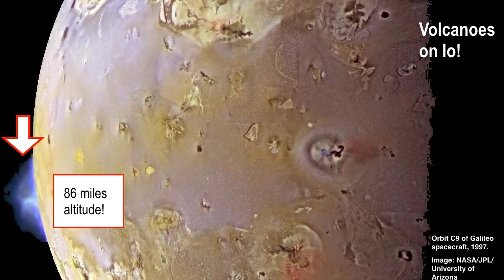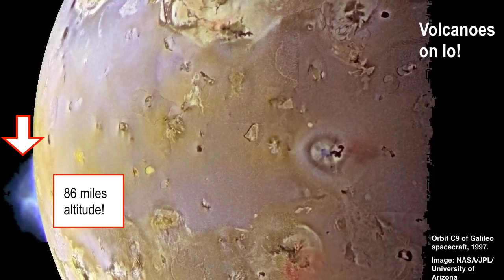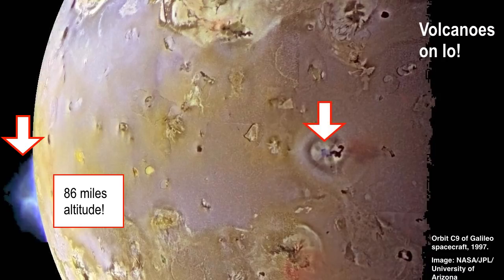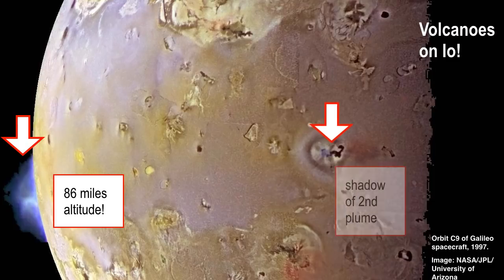Look at this image carefully — you see another plume. There's a black smudge with a plume above it. Come up and point it out. That's the plume right there — and the black smudge is the shadow of it. The plumes get so large because the force of gravity at the surface of Io is really weak — a little bit stronger than the moon but way weaker than Earth.